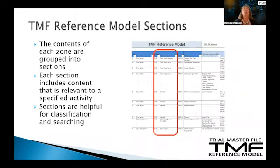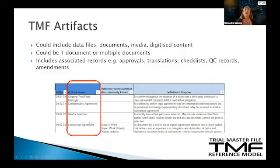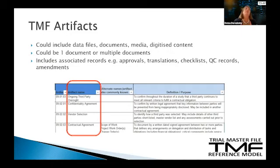Sections are helpful in terms of classifying content and also searching for artifacts. Artifacts can be things like data files, documents, maybe a video, some type of media, any kind of digitized content — those are all considered artifacts. It could be one document or lots of different documents. For example, informed consents is an artifact where you could have different types of informed consents filed in that section. It also includes associated records, so when we have documentation like translations or QC checklists, maybe document approvals, all of that content can be filed with those artifacts as well.